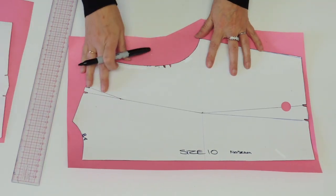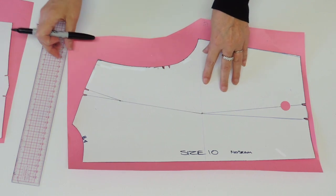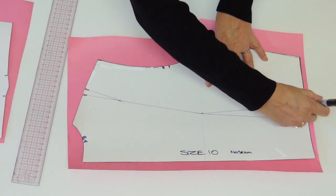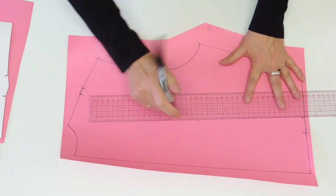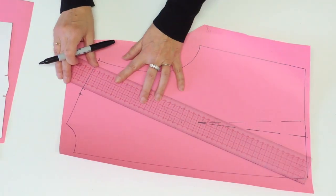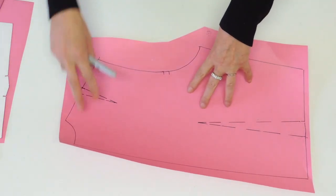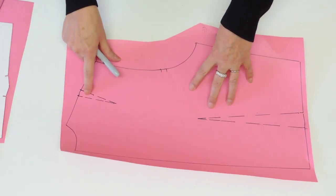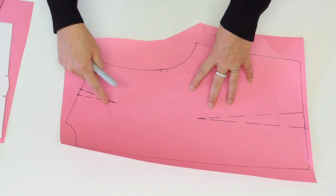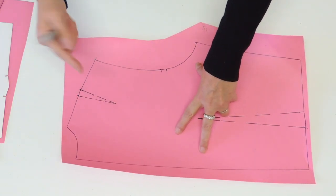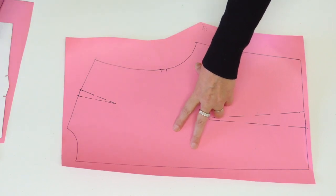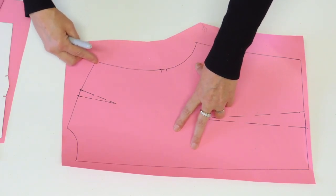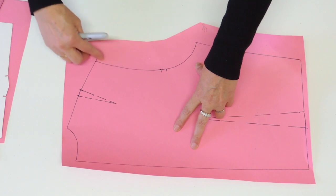Let's start with the back. So on another piece of paper or cardboard, you're going to trace your block. So you see that it's the basic block with the shoulder dart. So what we're going to do in the back is pretty simple.